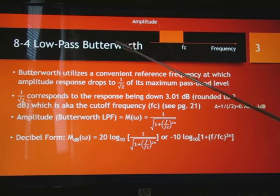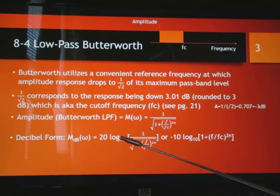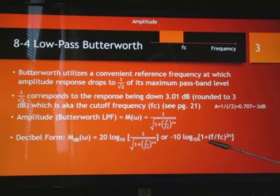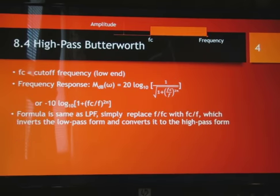So this is a low-pass Butterworth filter, and here's some of the calculations we can use. This is for amplitude, and this one's for result in decibels. I would use this one compared to this one because it's less prone to error. Either one works and gives the same answer, and I recommend using this one.